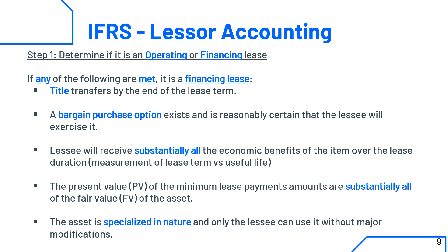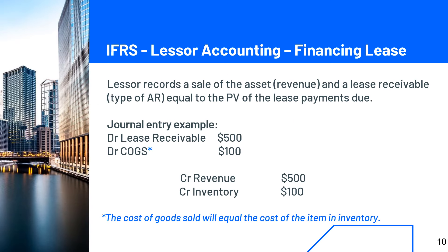The last criteria is that the asset is specialized in a way where it can only be used by the lessee — for example, a microwave that can only cook at a specific temperature and can only fit specific foods. Once you know it's a financing lease, you need to record the sale of the asset and the lease receivable, which is equal to the present value of the lease payments.